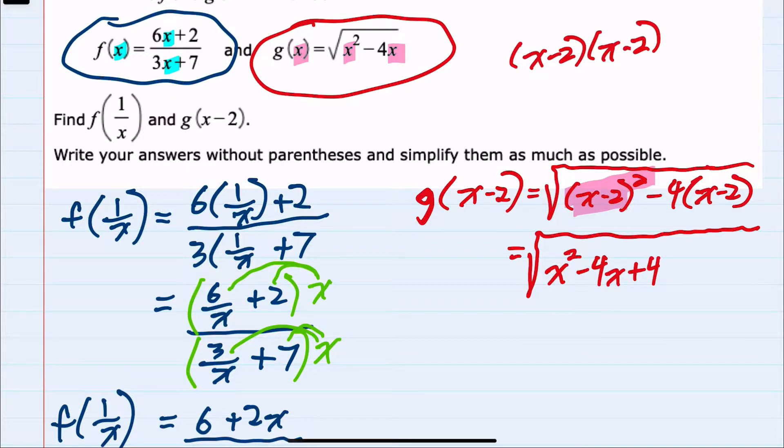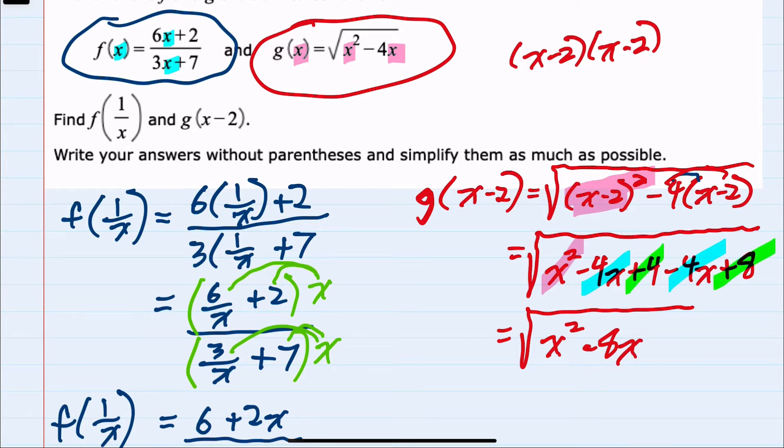And then for the second part, we can distribute this minus 4 that's being multiplied by x minus 2, first multiplying it by the x. Minus 4 times x is a minus 4x. And then minus 4 times minus 2 is a plus 8. And we can simplify by combining some like terms. There's only one squared term, so x squared. But we do have two x terms. They're both minus 4x, so we can combine those minus 4x and minus 4x as a minus 8x. And then we have two constants, plus 4 and plus 8. We can also combine those like terms as a plus 12.